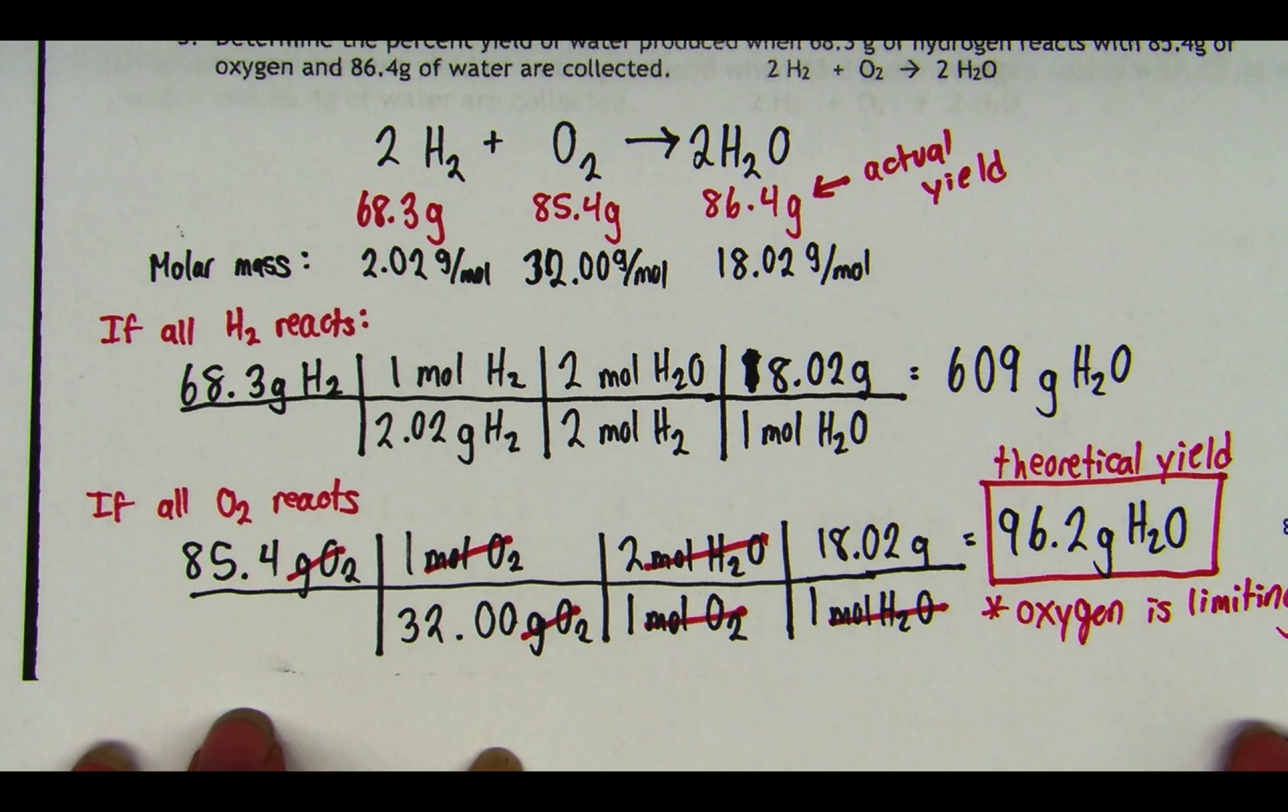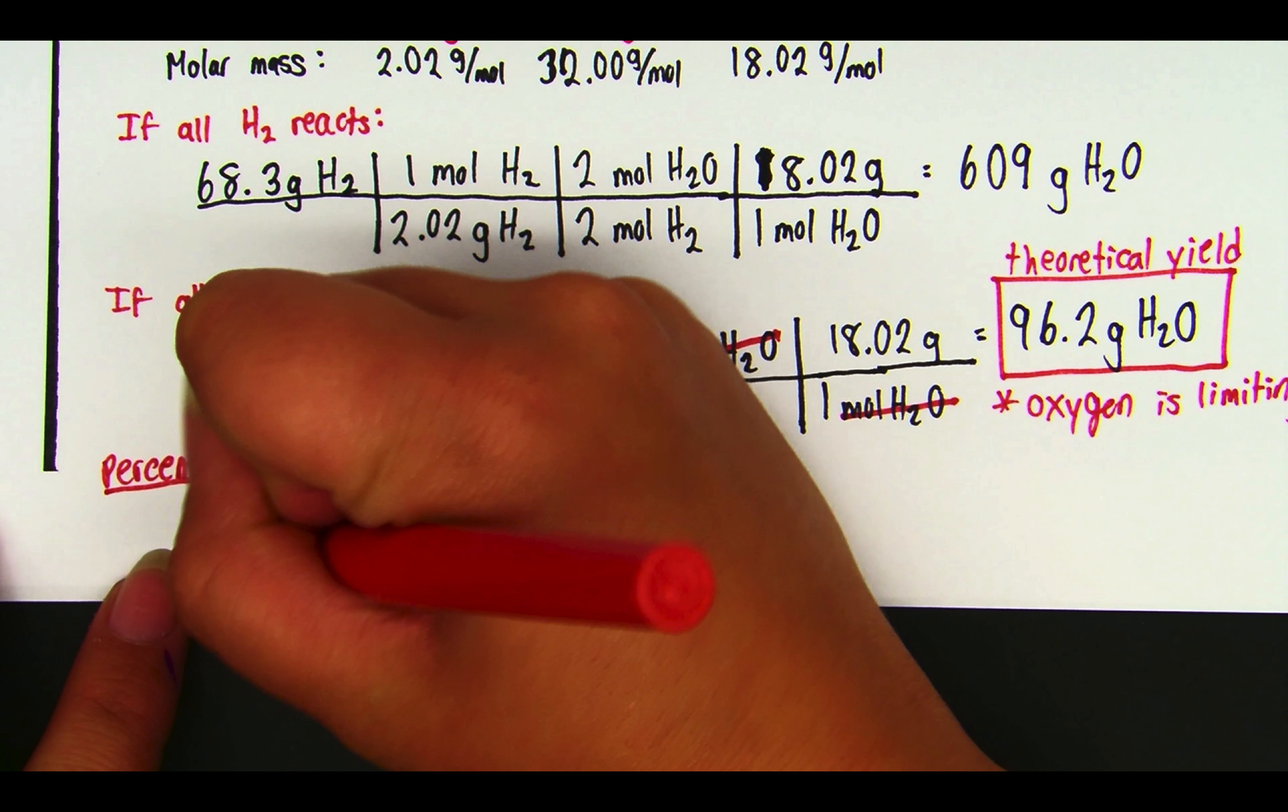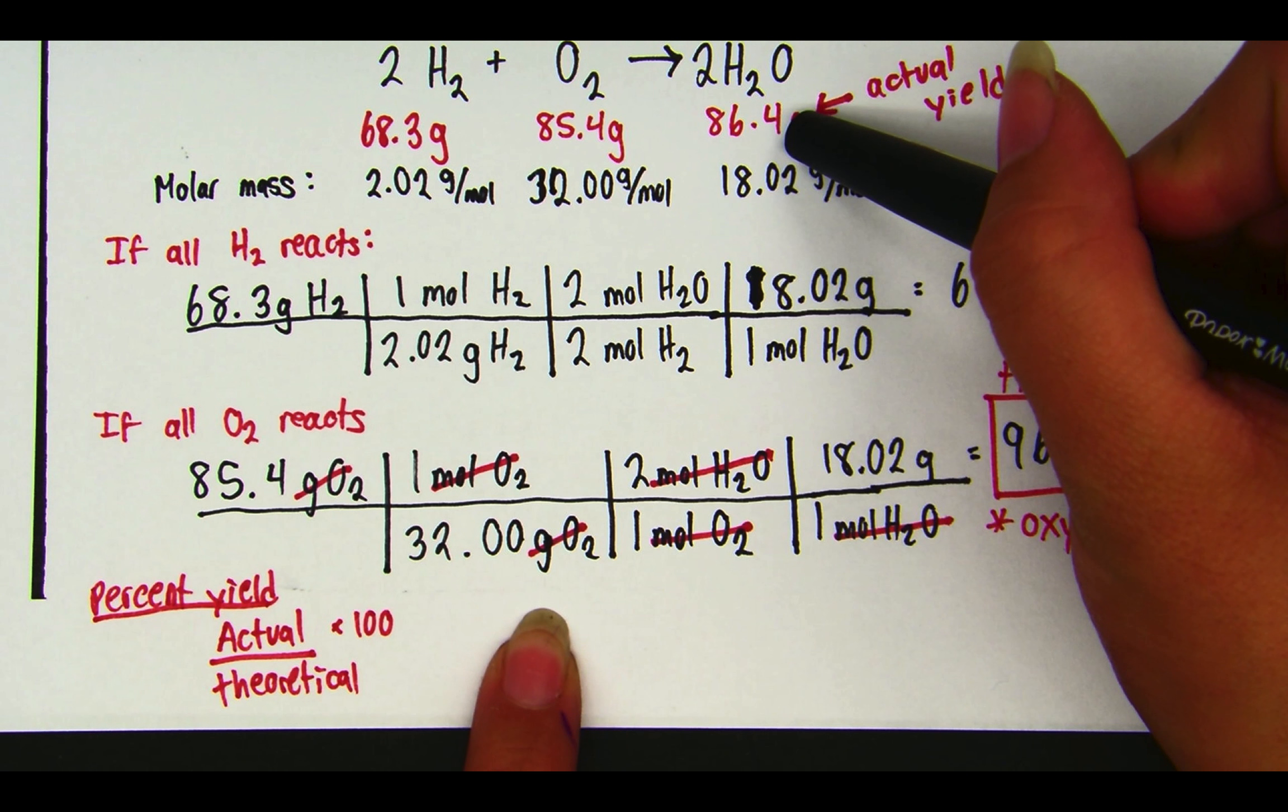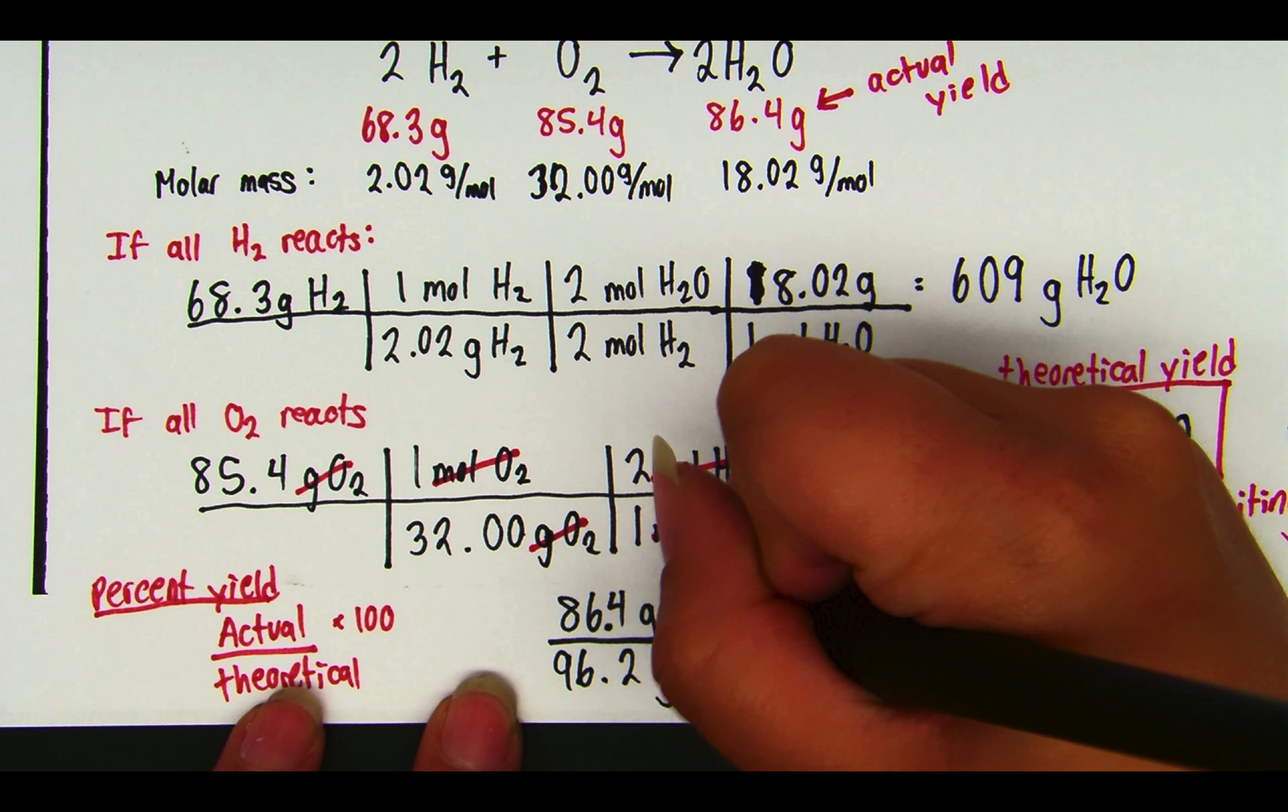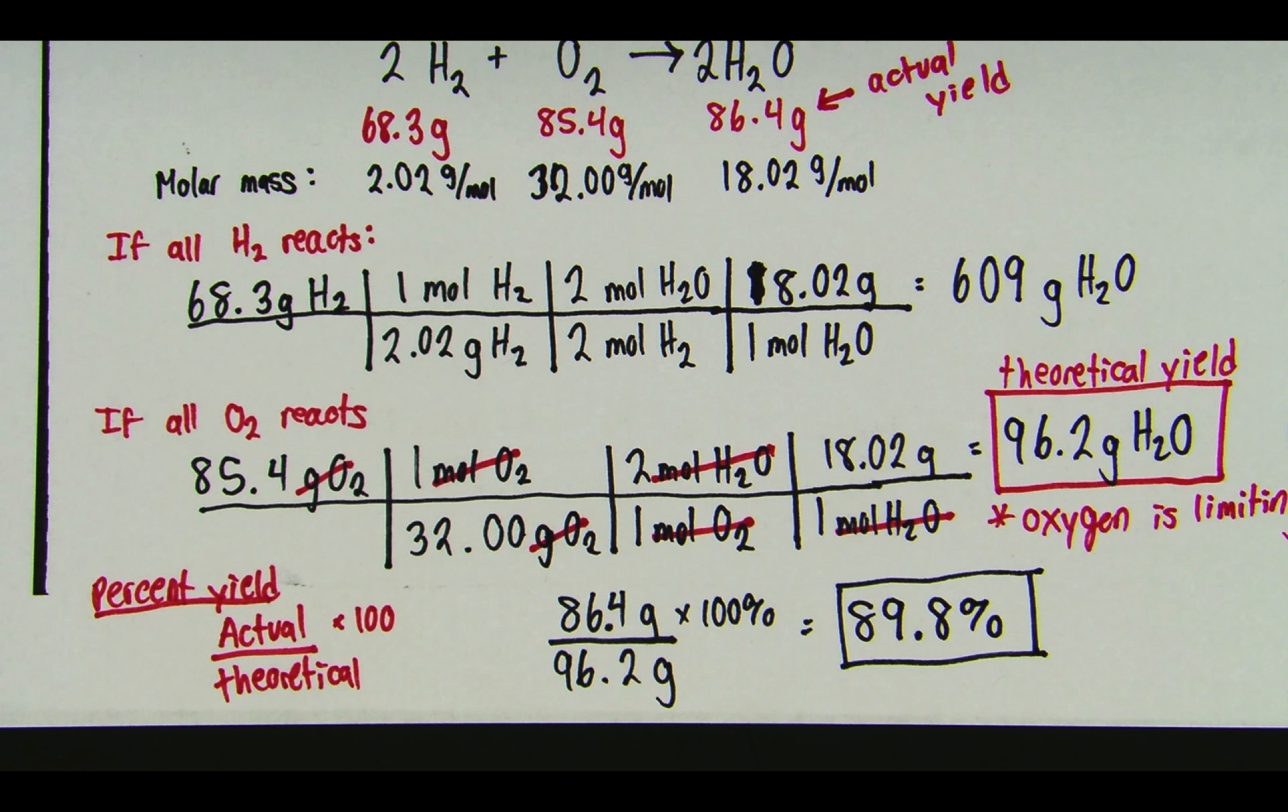Now let's go ahead and find the percent yield. I'm running out of room here, but the formula for the percent yield is actual divided by theoretical, and then you times it by 100. Just like when you figure out your percentage on a test, you take what you actually got right divided by what you theoretically could have gotten right, and you times it by 100. That's your percent on a test. That's your yield in chemistry class. So my actual yield, you'll remember, was 86.4. So 86.4 grams divided by my theoretical yield, 96.2 grams. I times it by 100 to get it in percent form, and I come out with 89.8%.